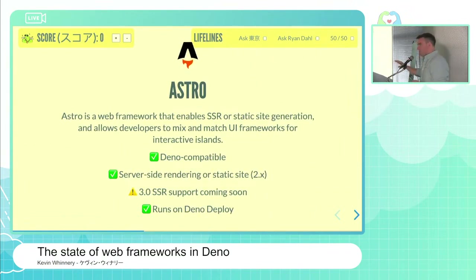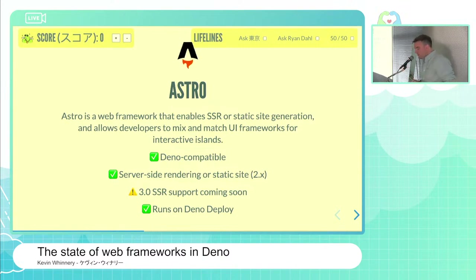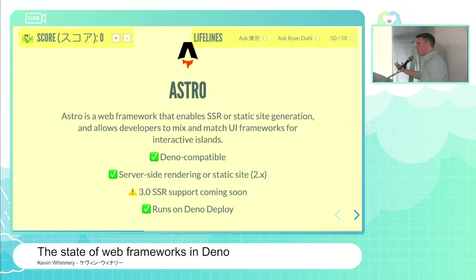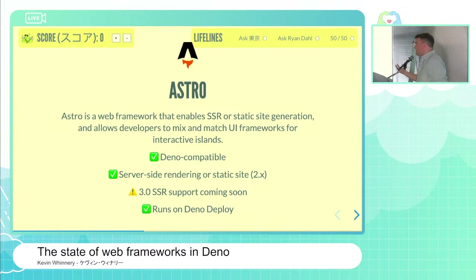Another option supported on Dino and Dino Deploy is Astro — a full-stack web application development framework that started for content-heavy sites but is actually pretty flexible. You can use it to develop dynamic web applications. One of its unique characteristics is the ability to mix and match different UI libraries within the same application — so you could use Vue and React as UI libraries within the same app. Astro, like another framework we'll talk about, is driven by Vite, and Vite support is actually pretty good in Dino today.